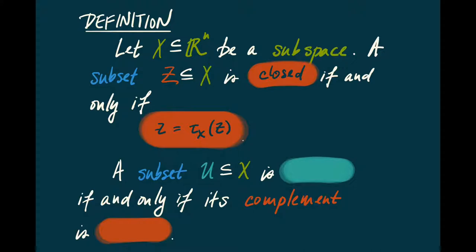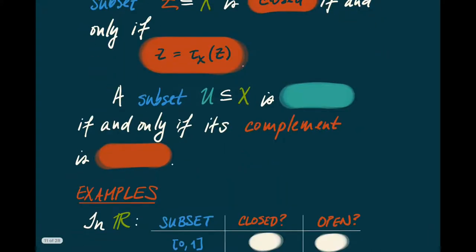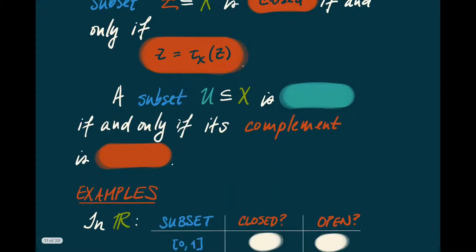The complementary notion is the notion of openness. A subset U of X is said to be open if and only if its complement is closed. Another way of saying that is that a subset U is open if and only if no point of U is close to the complement of U.